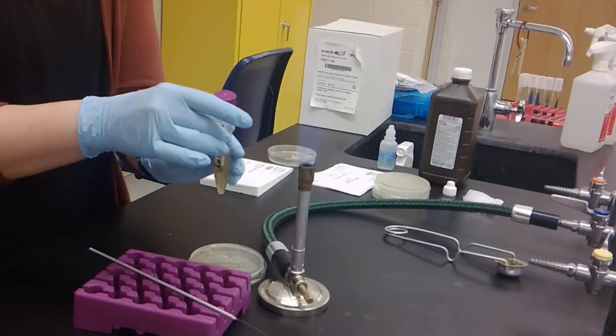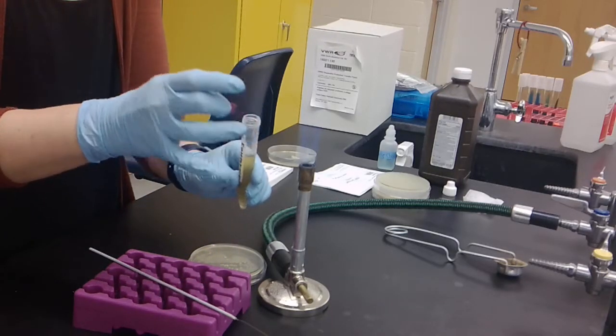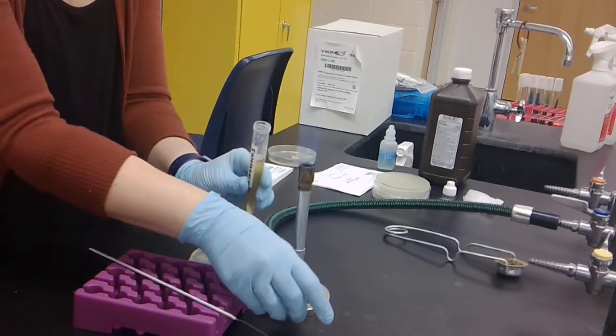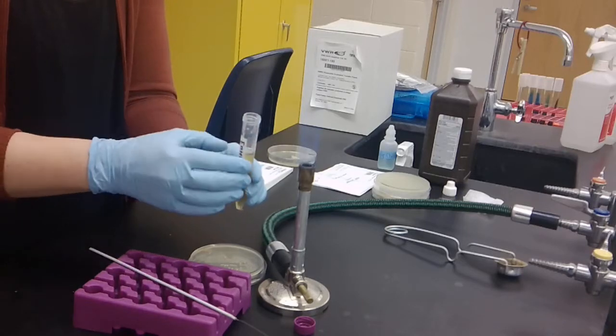Then you want to take your broth culture, open the lid, and either hold the lid in your hands or place it on the table with the cap opening underneath the Bunsen burner flame.